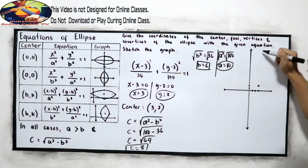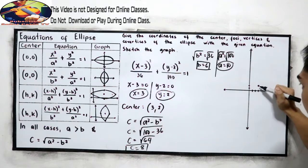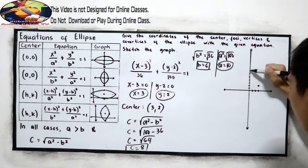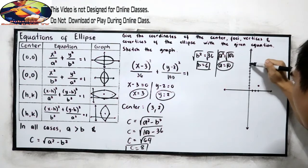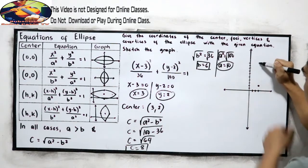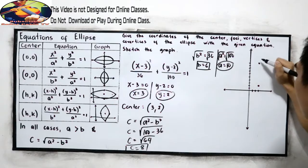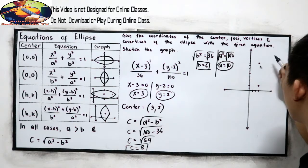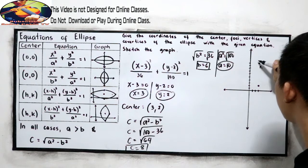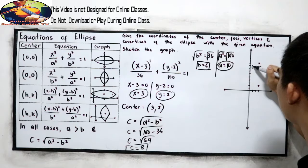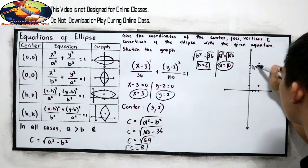Now we have a value for c. That means we can now locate our foci. So, 8 units up from the center. So this will be our F sub 1. Its coordinate is (3, positive 10).